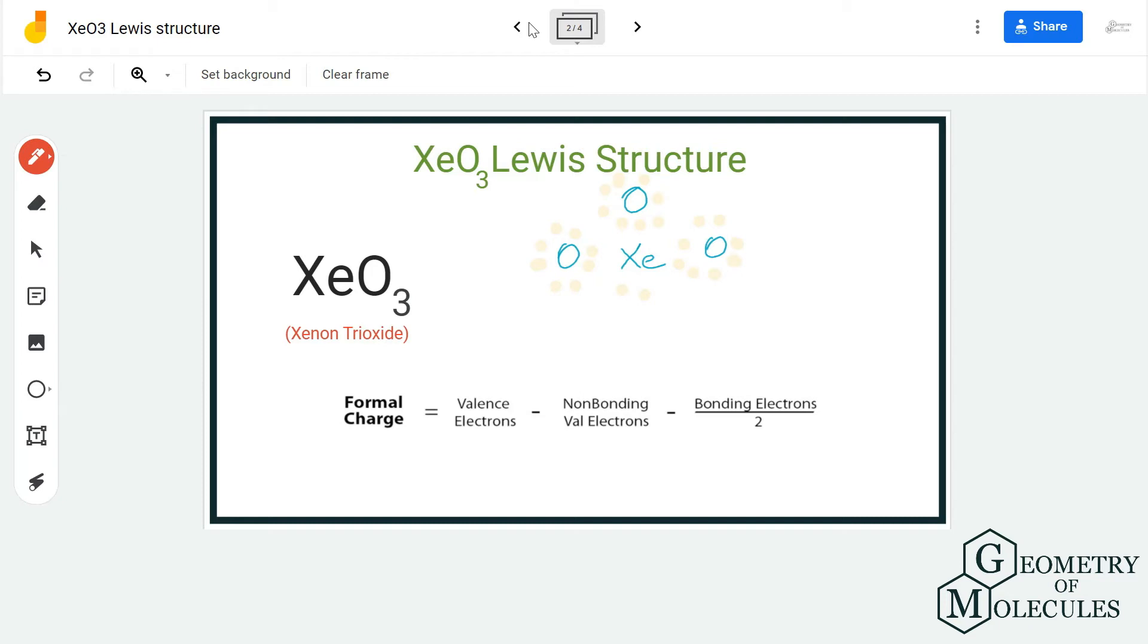For calculating the formal charges, you can either use this formula, or we have also linked our formal charges calculator down in the description box. For oxygen, there are six valence electrons, six non-bonding valence electrons, and two bonding electrons, so the charge on oxygen atom will be minus one.